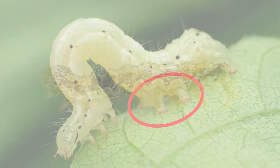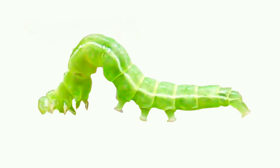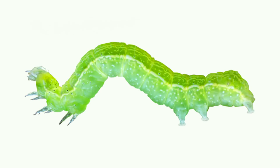When you compare that to the green clover worm, in this picture you can see that the green clover worm has three sets of prolegs. When comparing to the soybean looper, in this picture you can see that the soybean looper has two sets of prolegs. Again, this is the easiest way to identify between these three species of caterpillars.